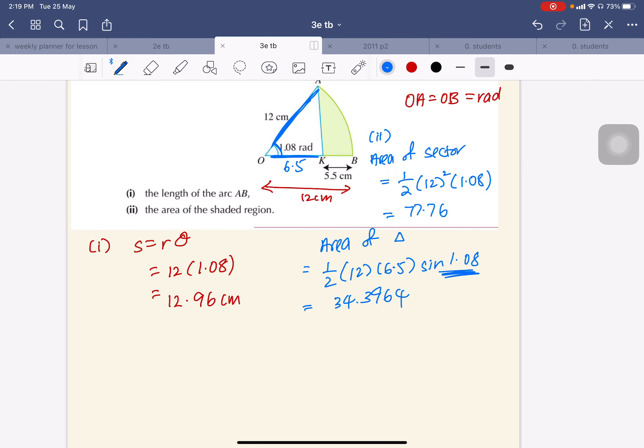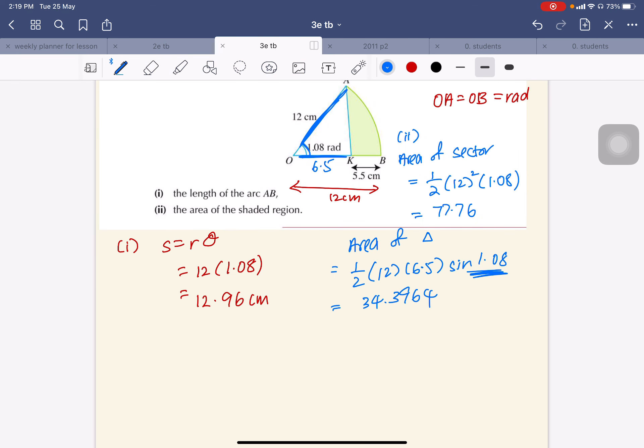So to find the shaded region, I will subtract: 77.76 minus 34.3964 equals 43.3636.